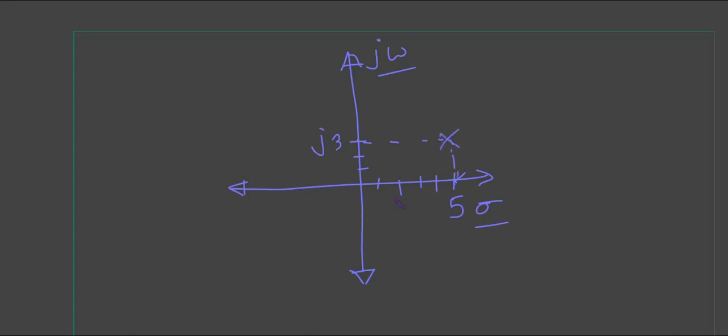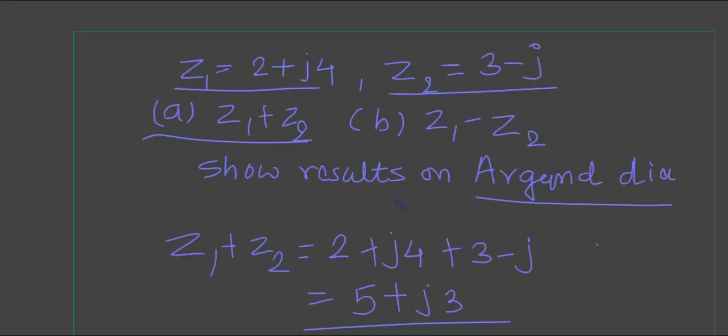Similarly, you can do the second part, which is z1-z2. First you have to find z1-z2, so instead of a plus sign there will be a minus sign.